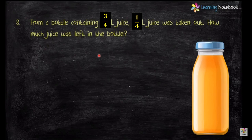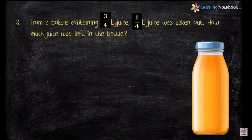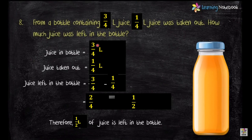One more example: from a bottle containing 3 by 4 liters of juice, 1 by 4 liter of juice was taken out. How much juice was left in the bottle? The keyword 'left' represents subtraction. Juice in the bottle is 3 by 4 liter, juice taken out is 1 by 4 liter. Subtracting the numerators: 3 minus 1 is 2, so 2 by 4. The simplest form is 1 by 2 — this you will also learn in Class 5.